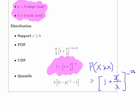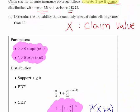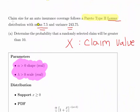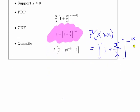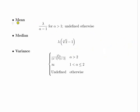Now the thing is, we actually have to find out what lambda and alpha are. So we're going to use these two pieces of information: that the mean is 7.5 and the variance is 243.75. The mean is lambda divided by alpha minus 1.